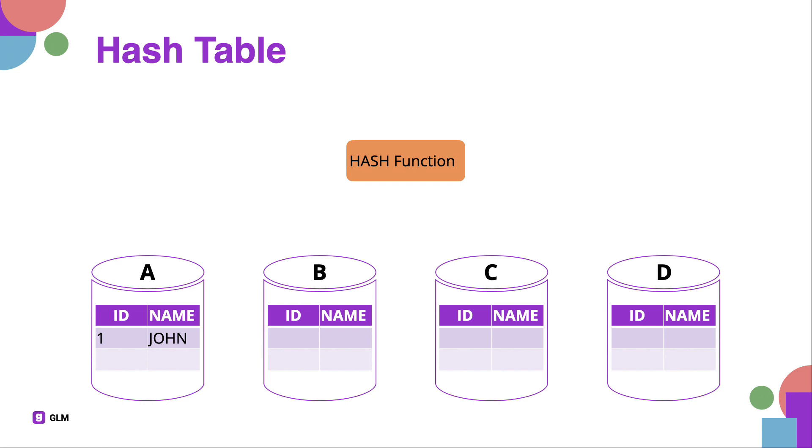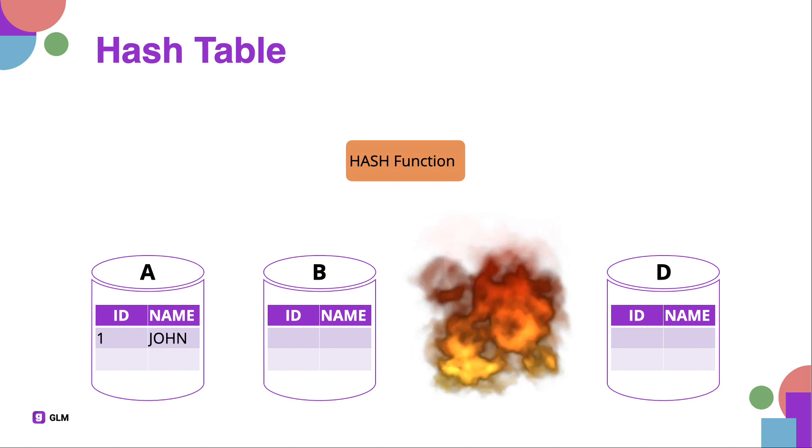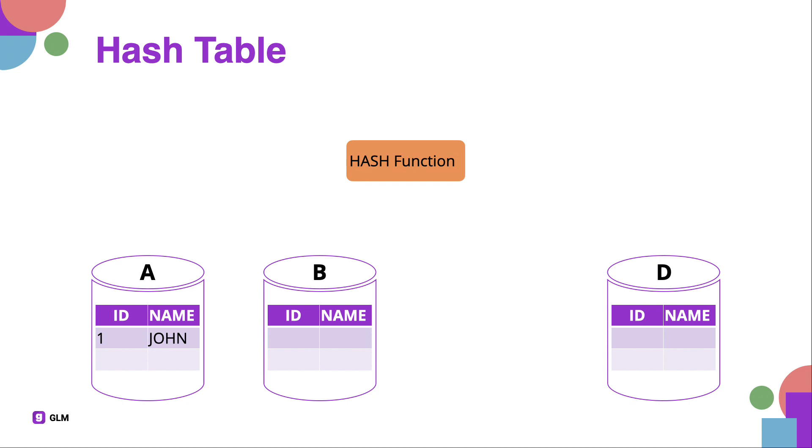Let's look at another example. If we insert Jessica, we hash it and get the server C. Now imagine your server burns into a pile of ashes. A new name comes in and it hashes to index of server C. You have a problem on your hands.